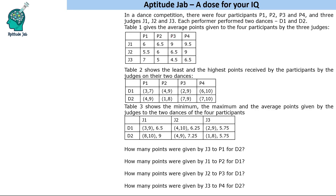The second table gives the least and the highest points received by the participants from the judges on their two dances. For example, P1 received a minimum of 3 points and a maximum of 7 points on dance one. P3 received a minimum of 7 and a maximum of 9 points on dance two. So we know the minimum and maximum, but we do not know the central values — that we will have to figure out.